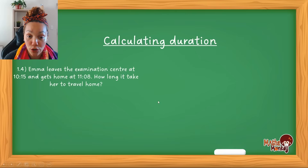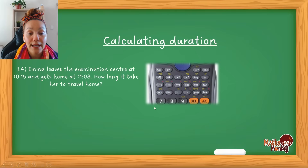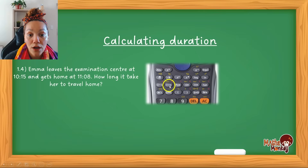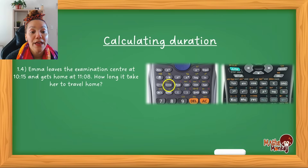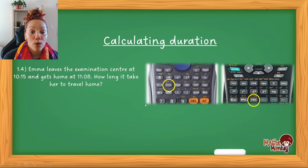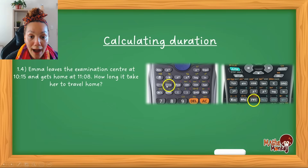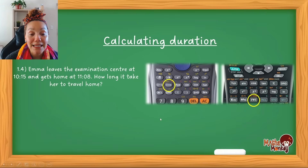Make sure you know the time button on your specific calculator. On a Casio calculator the time button looks like a circle with a colon and a double colon. On a Sharp calculator the time button is labelled DMS. In both cases the first part refers to hours, the middle to minutes, and the last to seconds.